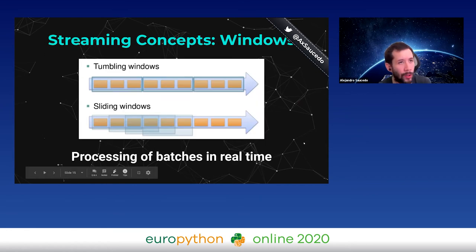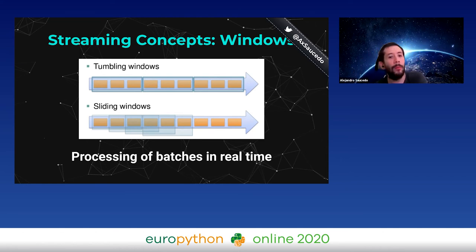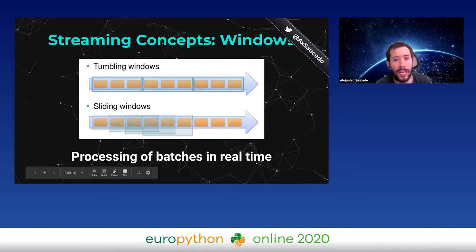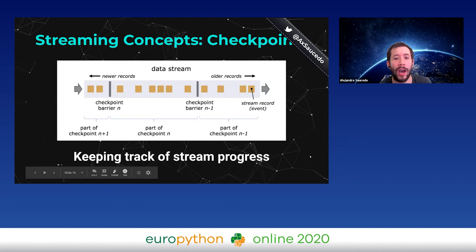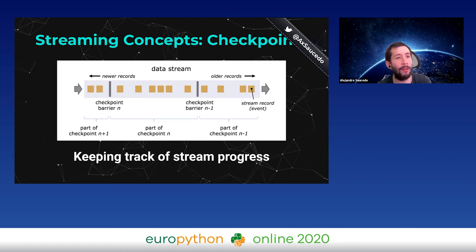Let's dive into some concepts of streaming. The first is windowing — you have traditional tumbling windows, where you take a chunk of data, process it, then move on to the next chunk. Then you have sliding windows, which are overlapping. Some systems implement these with batch capabilities running very frequently. Another concept is checkpointing — similar to a game checkpoint — which keeps track of the stream progress, important when you have many consumers consistently reading a stream who may suddenly crash.